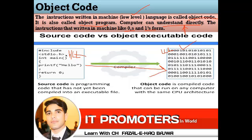For example, if high-level language code is converted into machine language, it becomes something like 0101... and so on. Only the machine understands object code — humans cannot easily understand it.